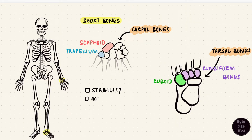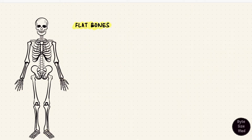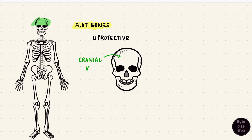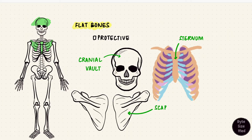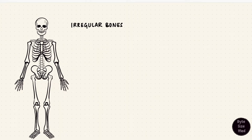The carpal and tarsal bones are short bones — they help stabilize the wrist and the ankle joints in addition to helping with some movements. Flat bones are like curved plates; they are protective, like the bones that form the skull vault — the frontal bone and the parietal bone. The sternum is another example of a flat bone, as is the scapula. Flat bones surround body cavities, hence they are protective.